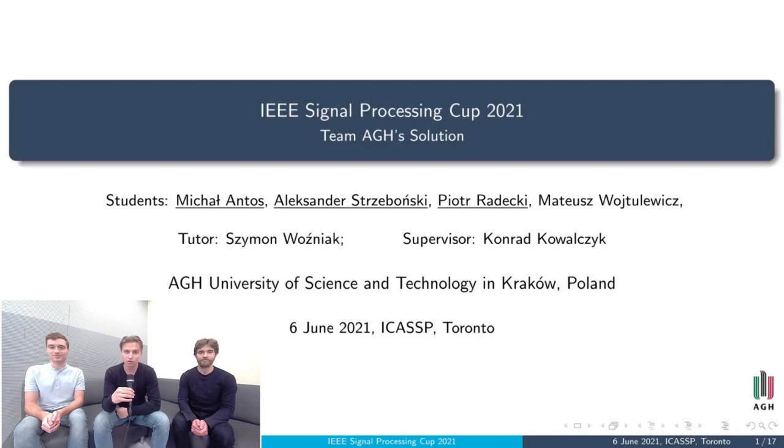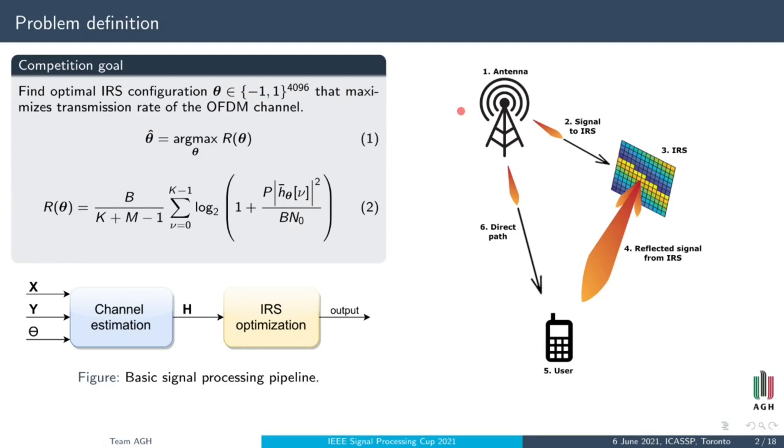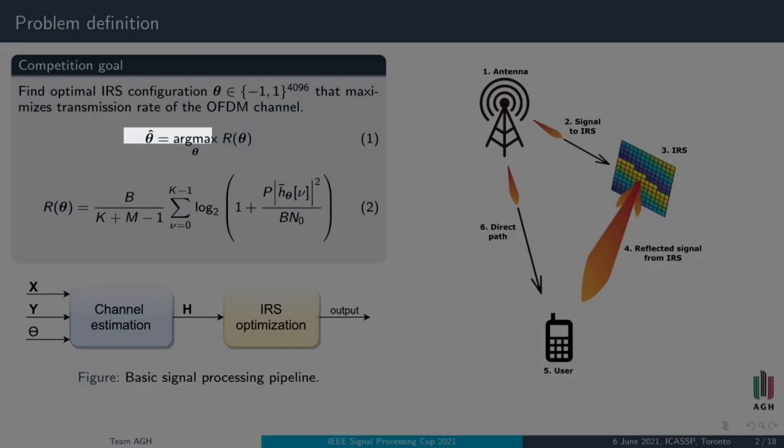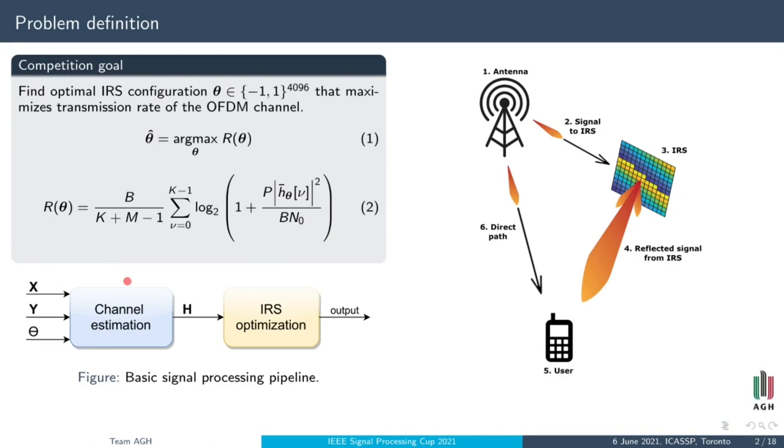We are considering a scenario where signal is transmitted from antenna directly to the user and in addition part of the signal is reflected by IRS. Our goal is to find such IRS configuration that the transmission rate at user is as high as possible. To do that, we have to firstly estimate channels and then maximize rate function.